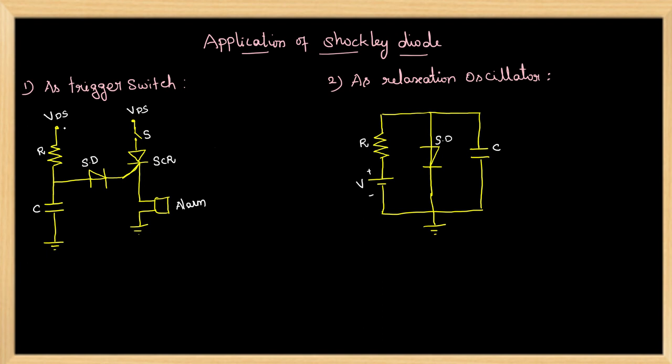In this circuit, the RC is connected to the DC supply and the capacitor starts charging. When the voltage across the capacitor becomes equal to the breakover voltage of Shockley Diode, it turns on and triggers the SCR by providing the gate current.